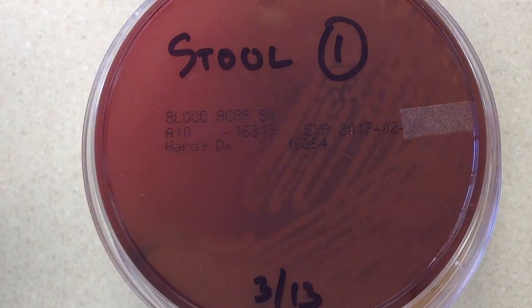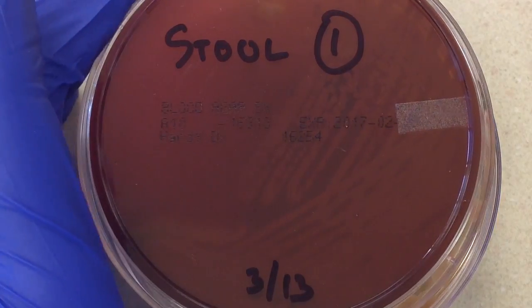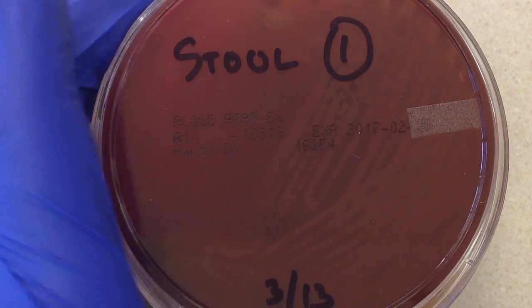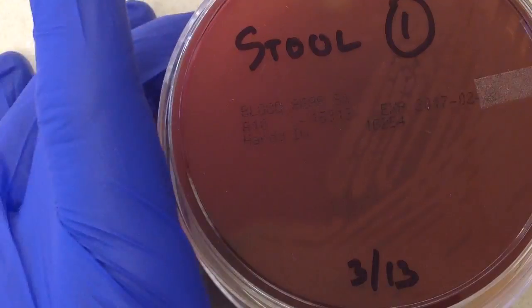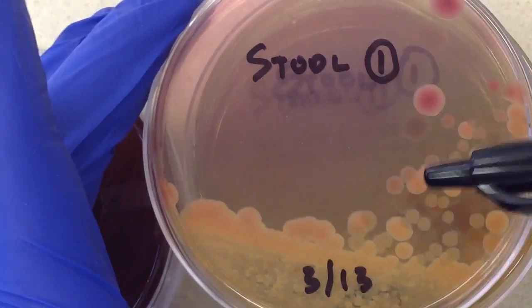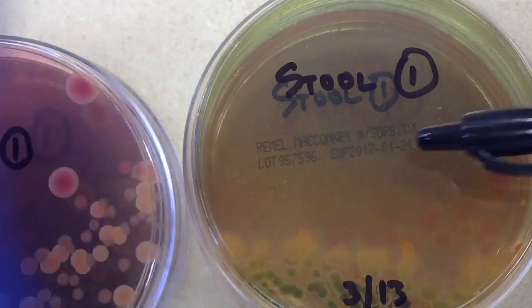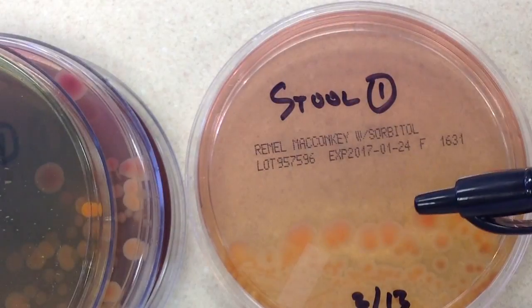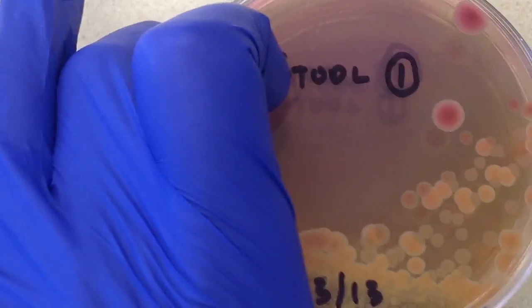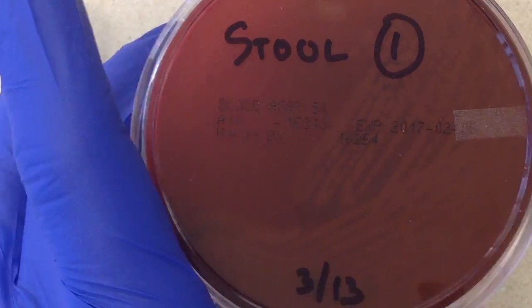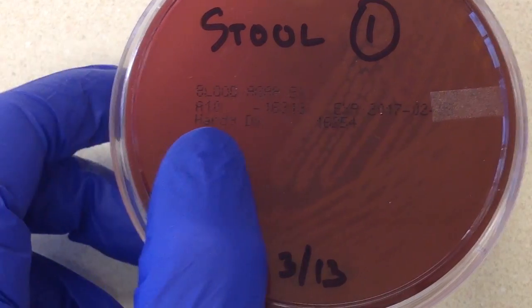I always insist that my students understand the media they're using, what it's made out of, and what its function is. Sheep blood is a supportive differential. McConkey's is selective differential. Hectone enteric is selective differential. McConkey's with sorbitol is also selective and differential. These different qualities give us a lot of information and help us in the workup of organisms or mainly pathogens.